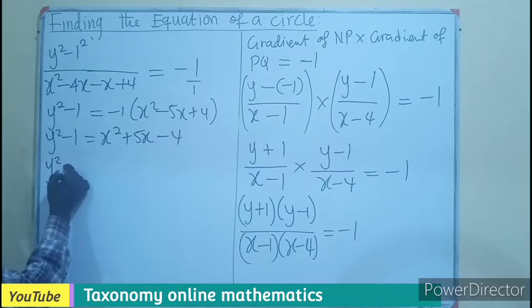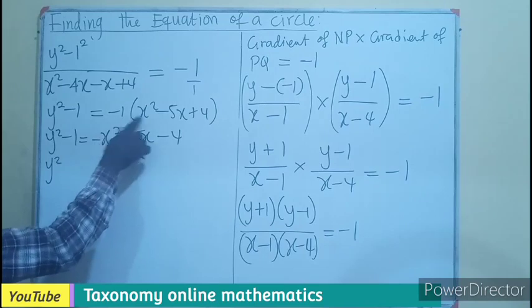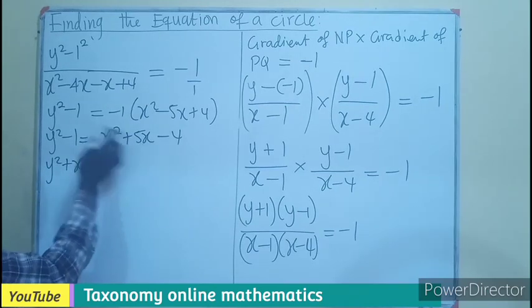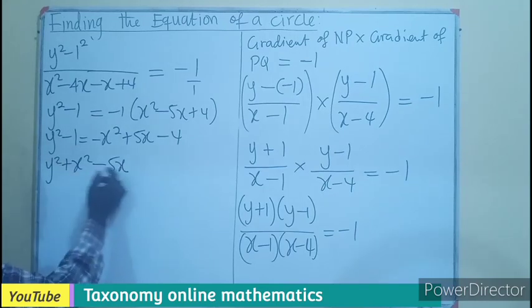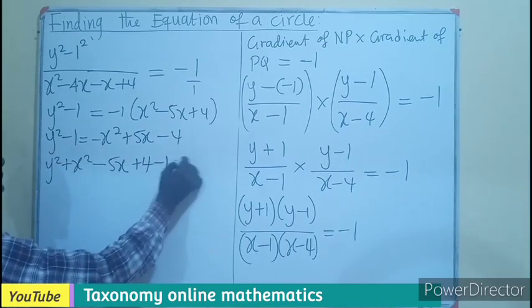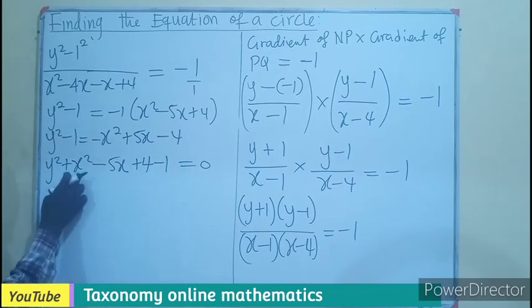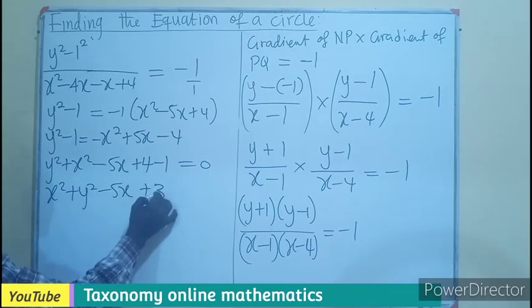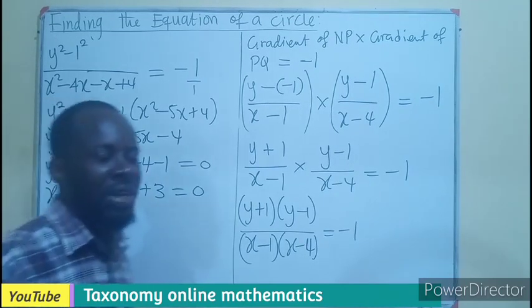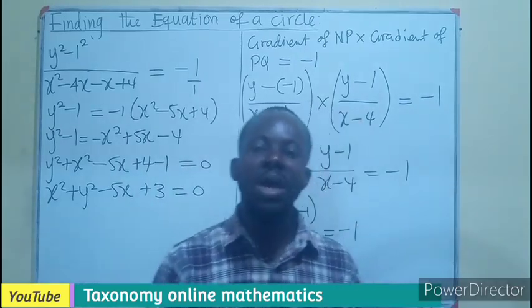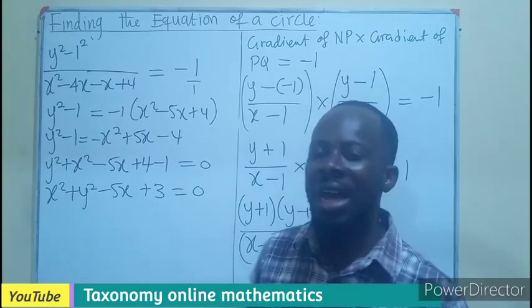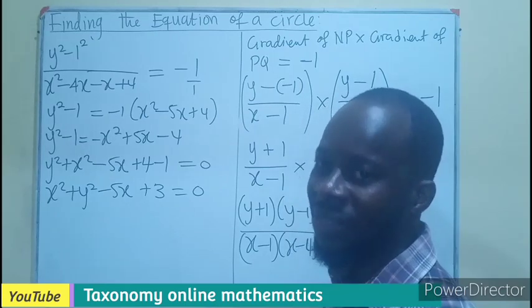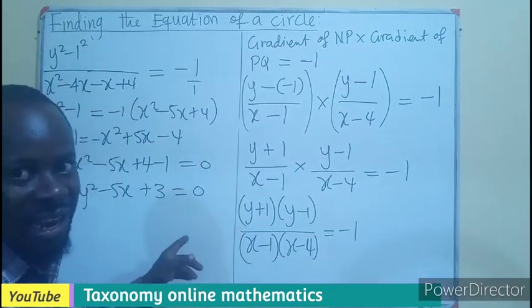So the equation of the circle with diameter endpoints (1, −1) and (4, 1) is: x² + y² − 5x + 3 = 0.